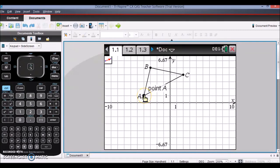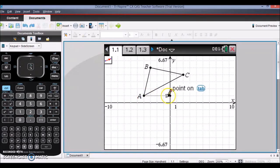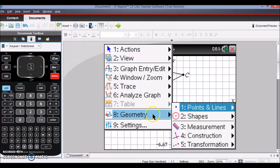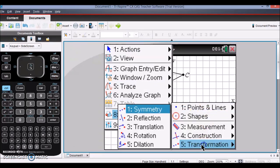Let's say I want to have my vector that translates things right 5 and down 3. I'm going to draw in that vector, and then if I return to my menu for Geometry and then Transformation, I have the option of a translation.